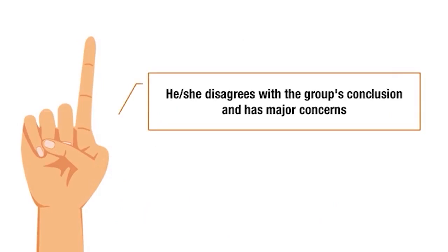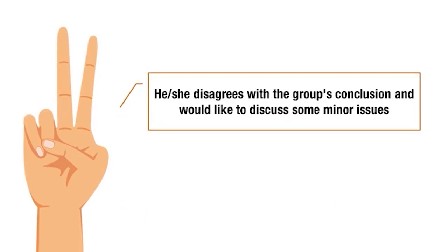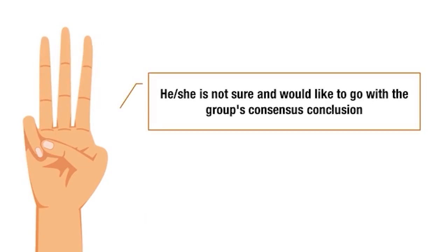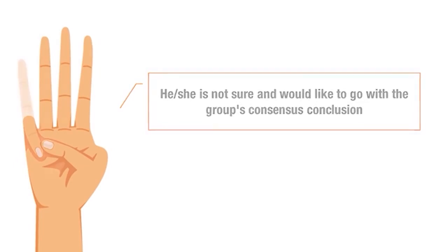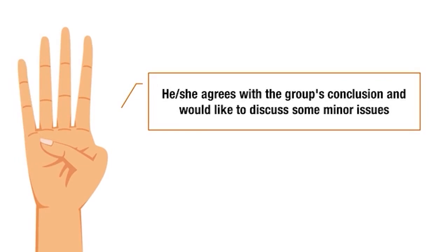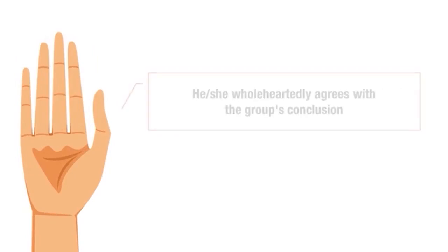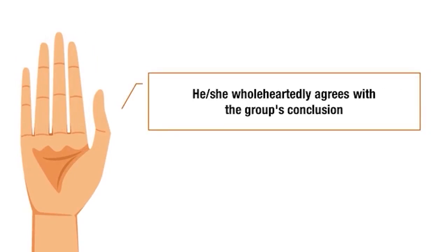Two fingers means disagreement with some minor issues to discuss. Three fingers means the team member is not sure and will go with the group's consensus. Four fingers means agreement but with some minor issues to discuss. Five fingers means wholeheartedly agreeing with the group's conclusion.